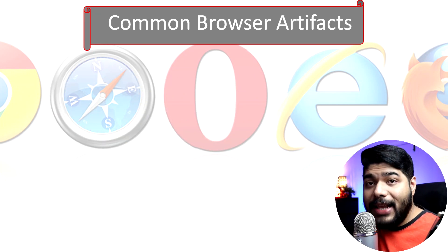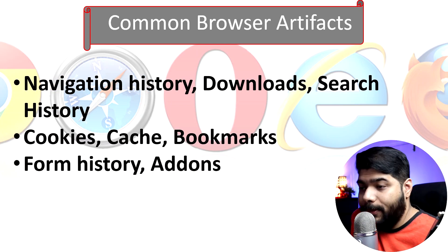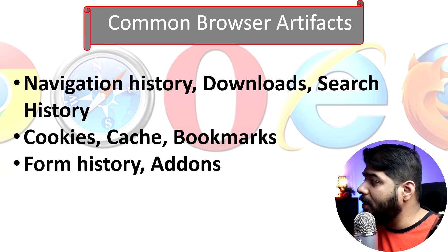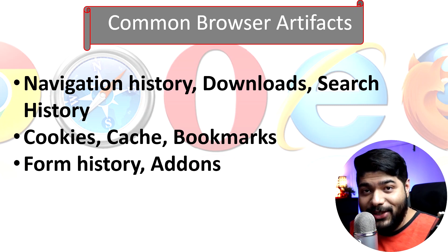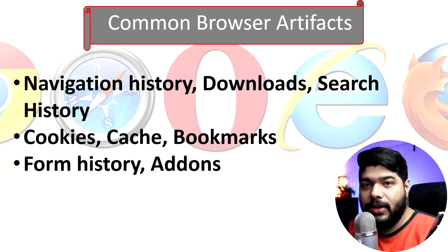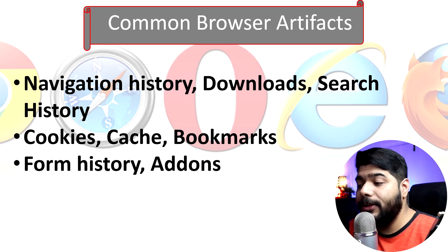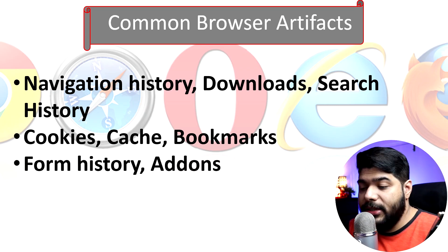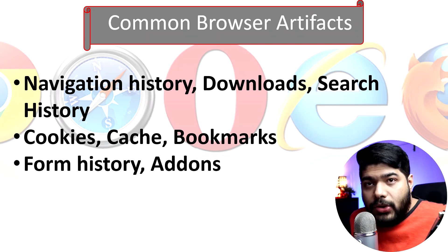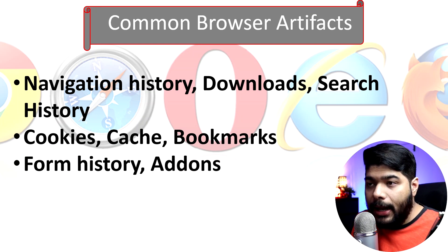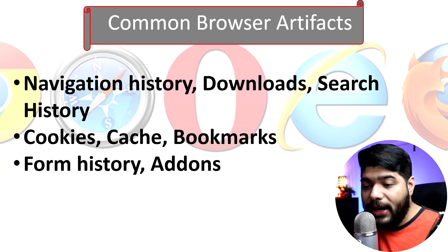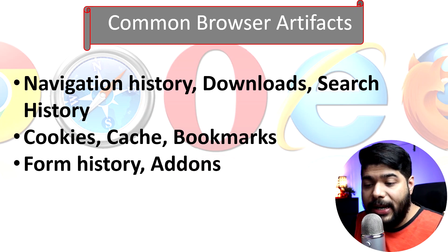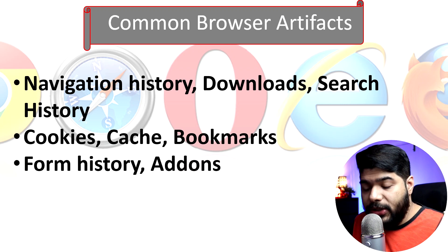When it comes to browser artifacts, you need to focus on three main things: navigation history, downloads, and search history. Search history and downloads are self-explanatory. Navigation history means when you browse something on your web browser, you click links that take you to another website, then another linked website — that chain is your navigation history. From one website you navigate through sub-pages or subdomains — that becomes your navigation history. This is very important to understand how the user was behaving just before the compromise took place.